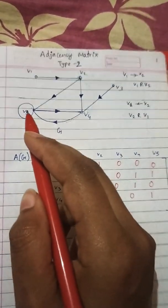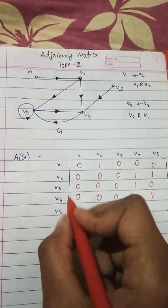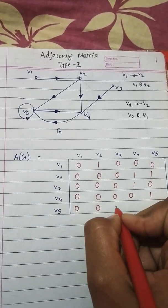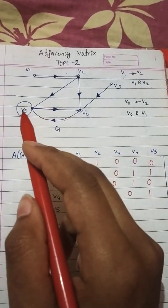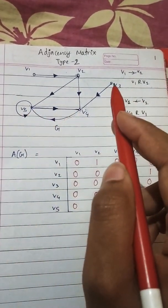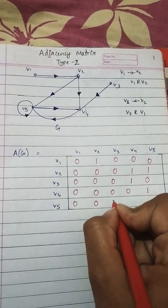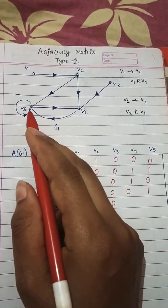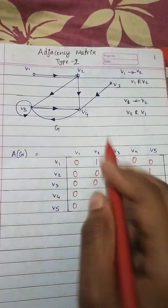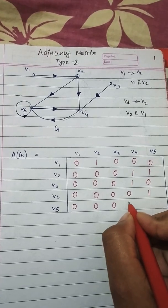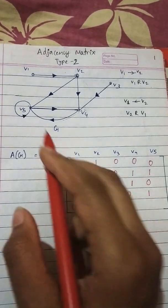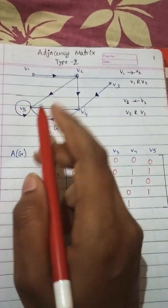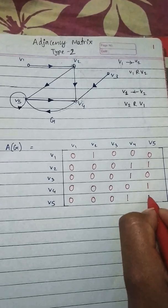V5 related to V1? No relation at all, 0. V5 related to V3? No relation at all, 0. V5 related to V4? Yes, by this arrow, so 1. V5 related to V5? Yes, because of the circular relation, therefore 1.